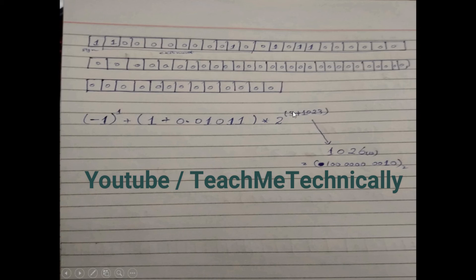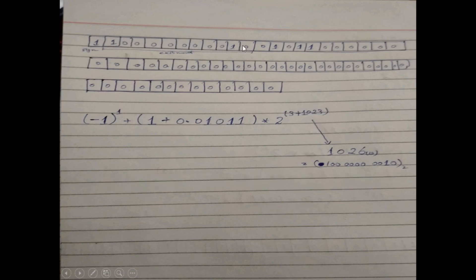The exponent is 3 and the bias for double precision is 1023, so 3 + 1023 = 1026. We convert 1026 into binary. Then we fill the 64-bit double precision format: the sign bit is 1, the next 11 bits hold the binary of 1026 which is 10000000010, and the remaining 52 bits hold the fractional part 01011 followed by zeros to pad the remaining bits.